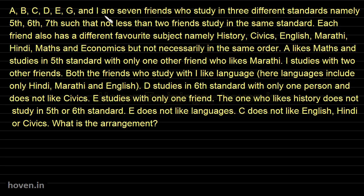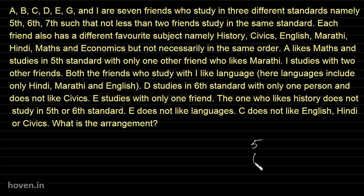A, B, C, D, E, G and I are seven friends who study in three different standards — namely fifth, sixth and seventh standard. Let us first of all draw somewhere here: fifth standard, sixth standard and seventh standard.